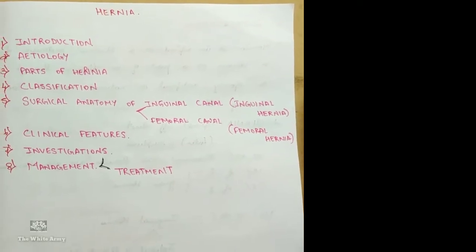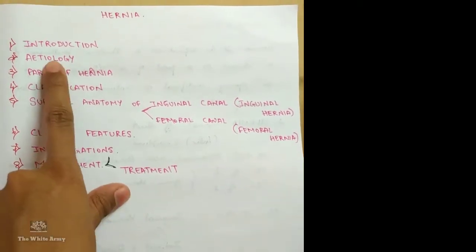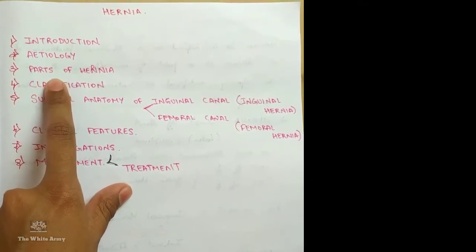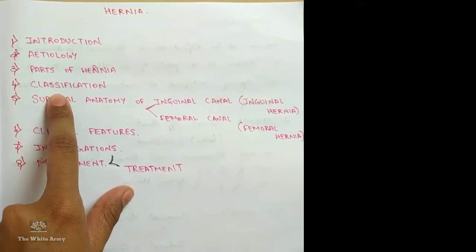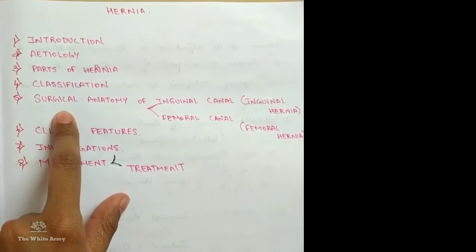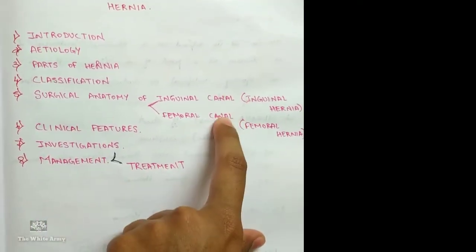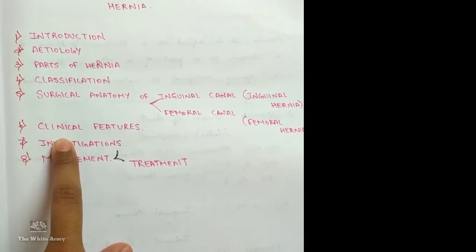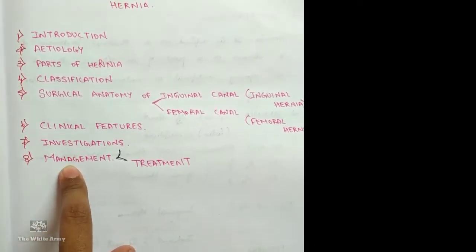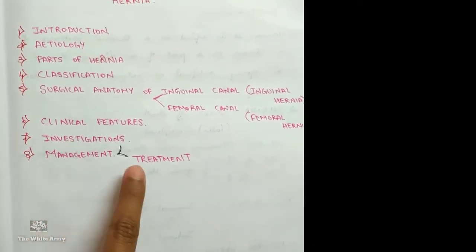I will be dealing with it under these headings: Introduction, etiology, parts of hernia, classification, surgical anatomy of inguinal hernia, femoral hernia also because these two are most common, clinical features which include signs and symptoms, and management which includes investigations and treatment.